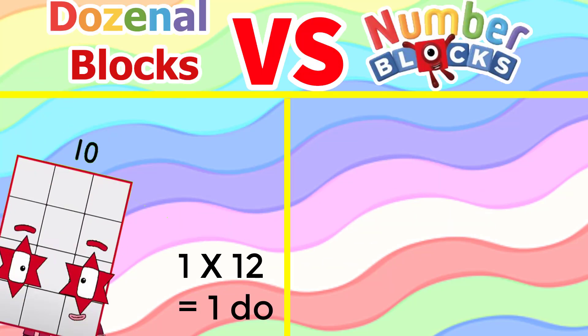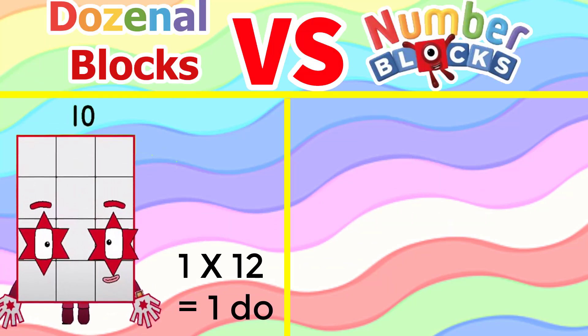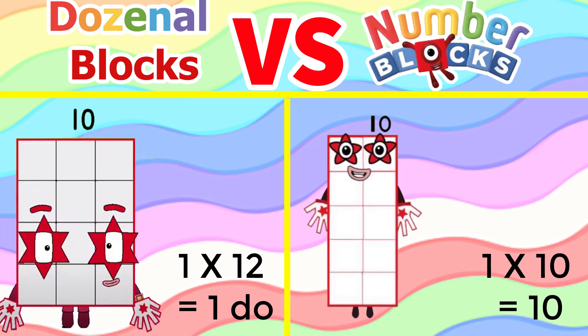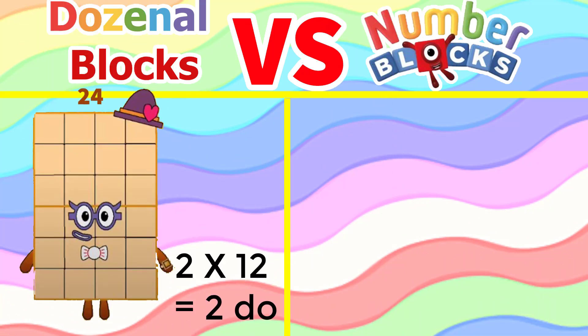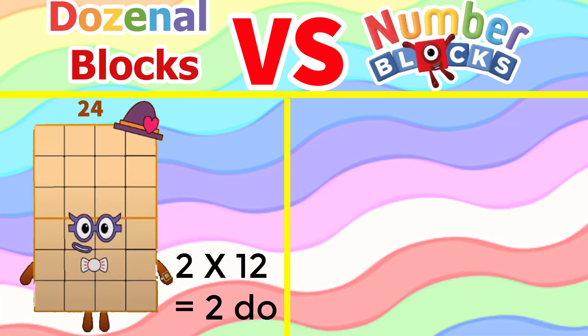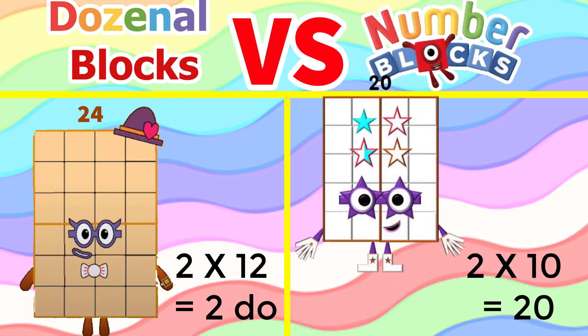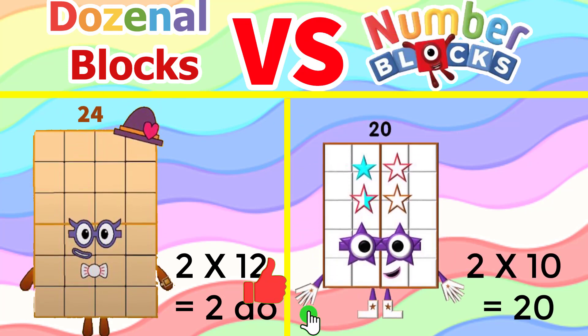1 times 12 equals 1 do. 1 times 10 equals 10. 1 times 12 equals 2 do. 2 times 10 equals 20.